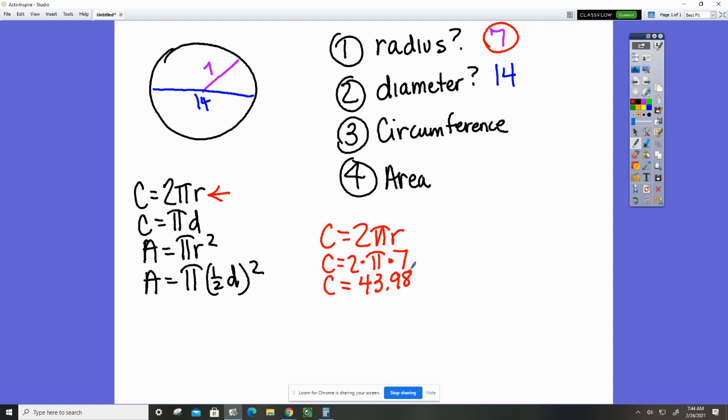Then you will be asked to find the circumference, or excuse me, the area. So the area, I'm going to use this formula: area equals pi r squared.